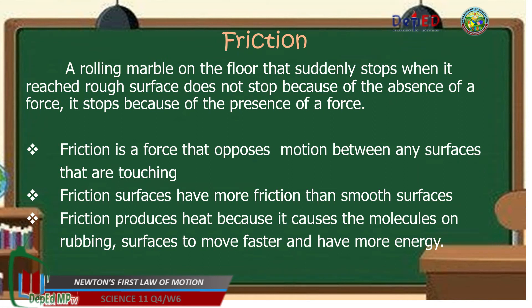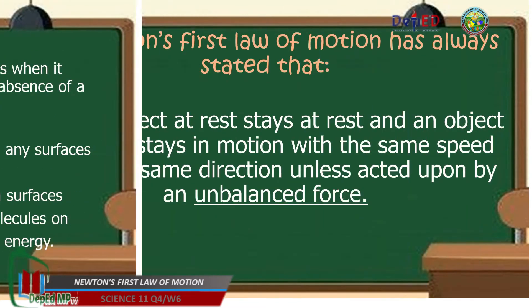So, let's continue. What is friction? In this scenario, a rolling marble on the floor that suddenly stops when it reaches rough surfaces does not stop because of the absence of force. It stops because of the presence of a force. So that friction is a force that opposes motion between any surfaces that are touching. Rough surfaces have more friction than smooth surfaces. Friction produces heat because it causes the molecules on rubbing surfaces to move faster and have more energy.